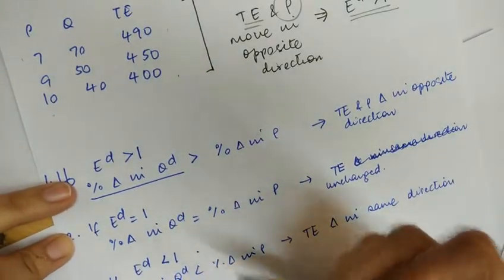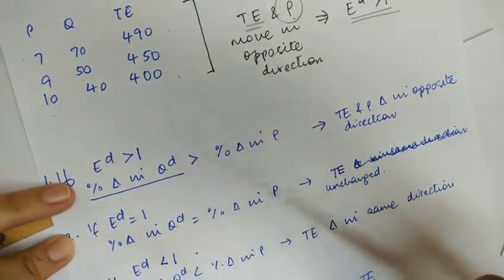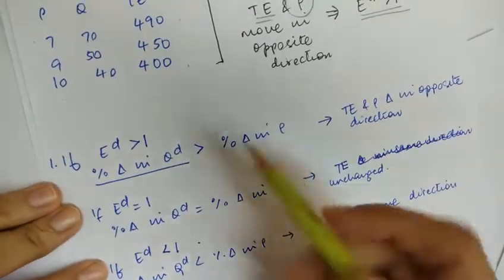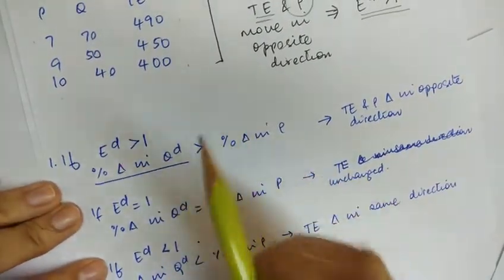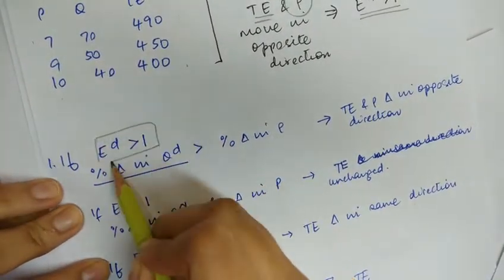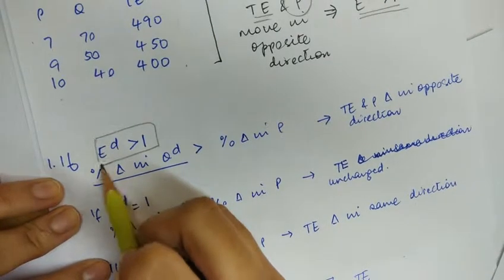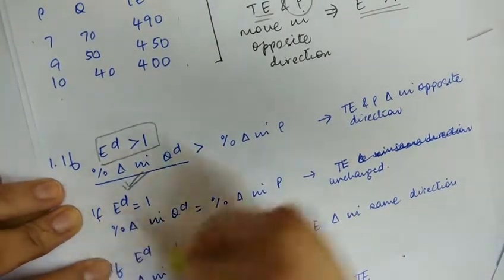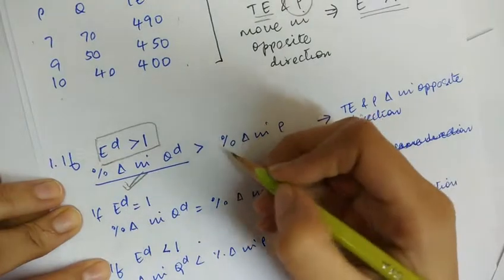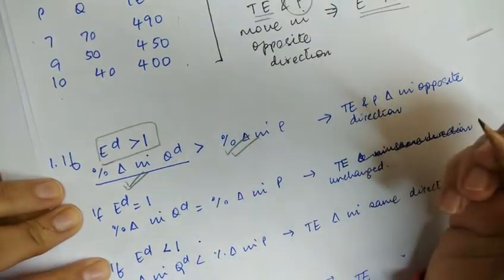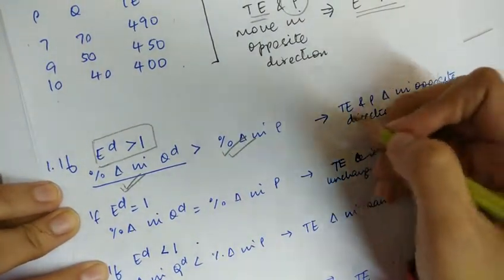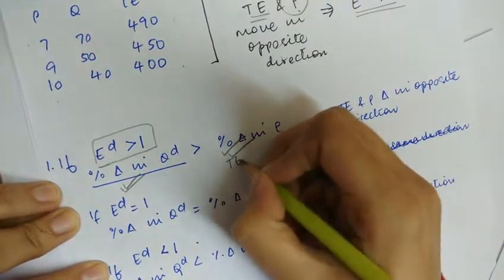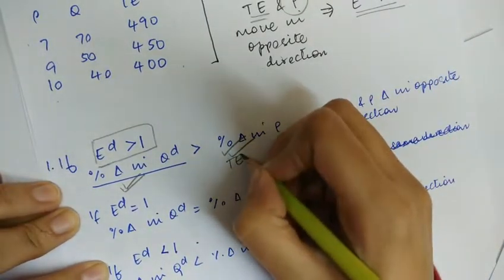Now let's look at the expenditure method with respect to percentage change in price and quantity. If elasticity of demand is greater than one, it means that the percentage change in quantity demanded is greater than the percentage change in the price of the commodity, and you will notice that the total expenditure will move in the opposite direction of price.